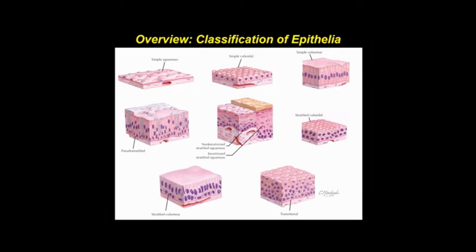Epithelium, one of the four basic tissues, is a layer of cells that covers body surfaces, lines internal cavities, or forms the parenchyma of glands. Covering or lining epithelium is classified histologically according to the number of cell layers — simple or stratified — and by the shape of the surface cells: squamous, cuboidal, columnar, pseudostratified, or transitional. Let's look at each of these in more detail.